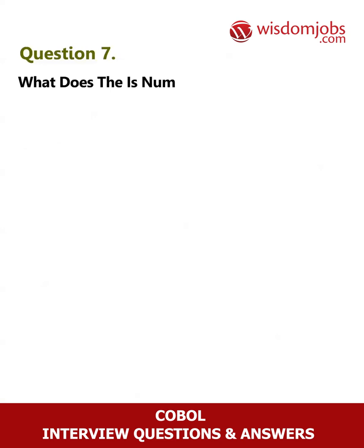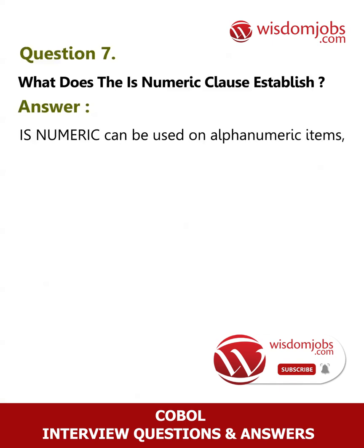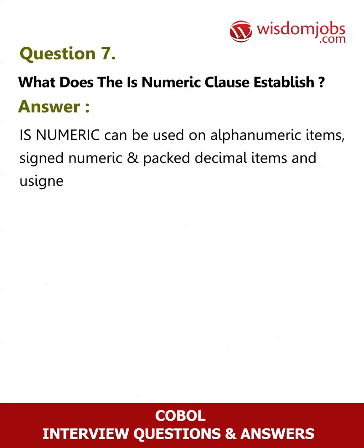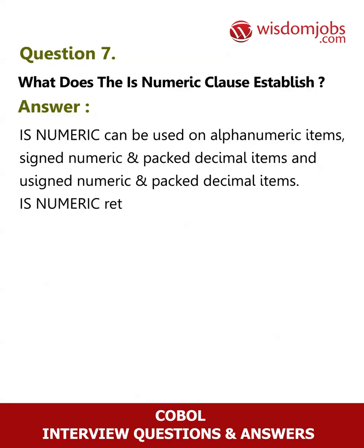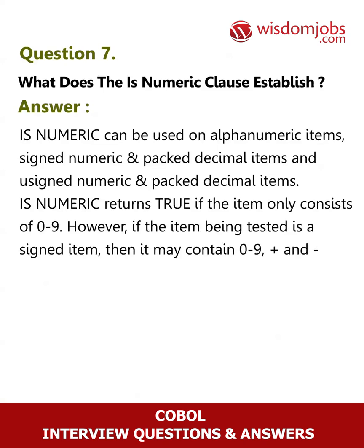Question 7: What does the IS NUMERIC clause establish? Answer: IS NUMERIC can be used on alphanumeric items, signed numeric and packed decimal items, and unsigned numeric and packed decimal items. IS NUMERIC returns true if the item only consists of 0 to 9. However, if the item being tested is a signed item, then it may contain 0 to 9 plus a sign.